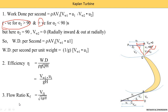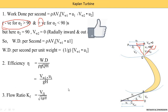Another term is the flow ratio Kf, which is the ratio of Vf1 to V1. So Kf = Vf1 divided by the square root of 2gH. Using this equation, we are able to find out Kf or Vf1.